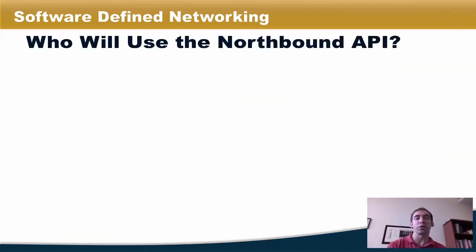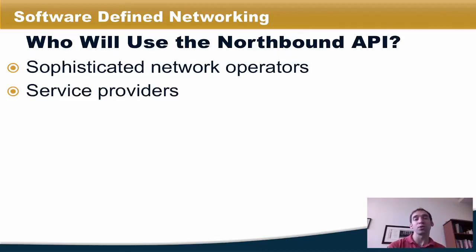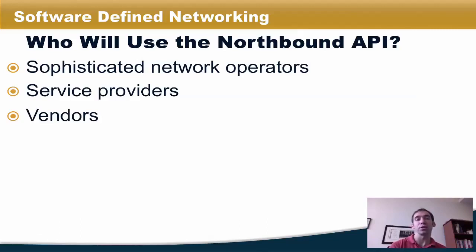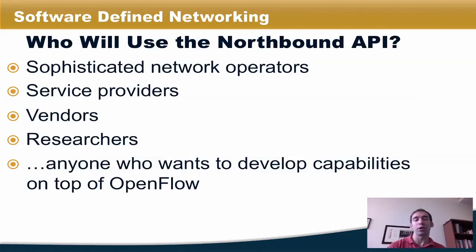There are a number of possible users for the northbound API. Sophisticated network operators who would like to develop and deploy complex network policies might write programs in a high-level language that talks to the controller through a northbound API. Service providers might wish to offer value-added services by developing applications that use a northbound API to talk to an SDN controller. Vendors might also package applications and services built using a northbound API. Researchers are also actively trying to develop new northbound APIs. Really, anyone who wants to develop capabilities on top of a southbound API like OpenFlow could be using the northbound API.